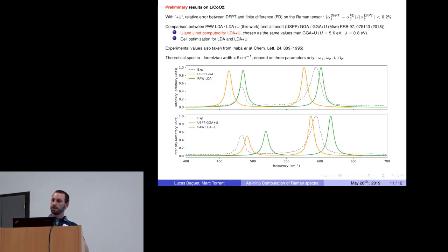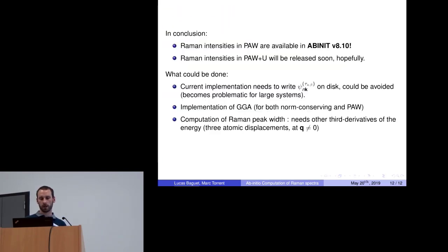At last, I present preliminary results on LiCoO2 with PAW plus U. First, I checked that the Raman tensor from DFPT and finite difference are the same. And I compared with work done by Myra in 2018. He used ultrasoft pseudopotentials and a GGA functional. We see that when they have no plus U for both GGA and LDA, the intensity peaks are quite similar. Whereas when we use plus U, even in our case in LDA, the ratio between the two peaks decreases, which is closer to the experimental values.